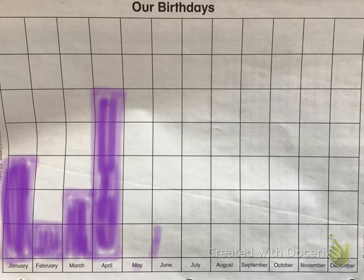Let's say there are three people born in June. So one, two, three, we fill it in.